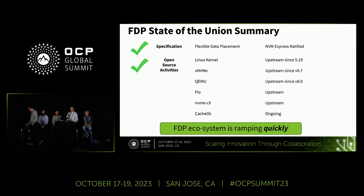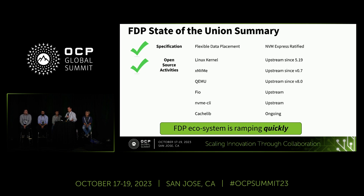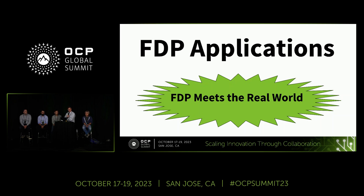It's great to have a standard, but we also need open source code to make it all work. FDP got ratified in NVMe Express in December 2022, and since then there's been a lot of open source activity. The Linux kernel has been updated, xNVMe has been updated, QEMU, FIO, NVMe CLI, and CacheLib is ongoing and very close. So the FDP ecosystem is ramping up very quickly. With that, let me hand it off to Wei.